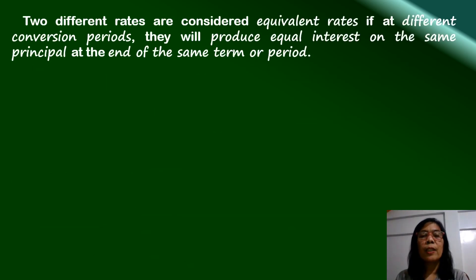Two different rates are considered equivalent rates if, at different conversion periods, they will produce equal interest on the same principal at the end of the same term or period.